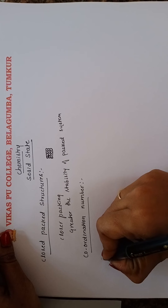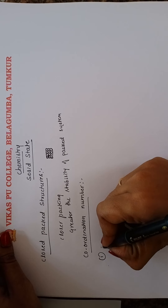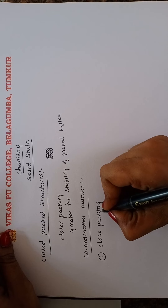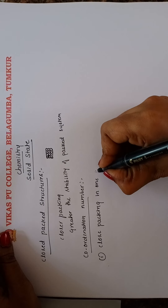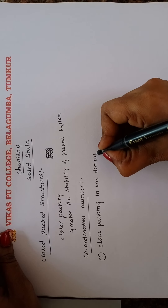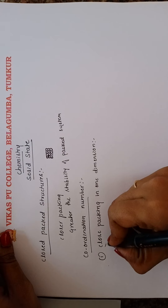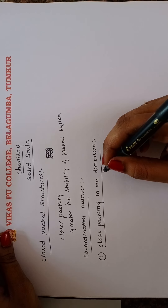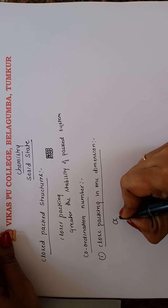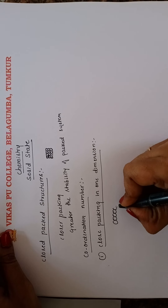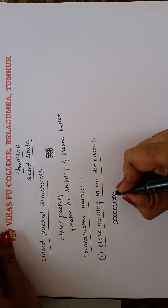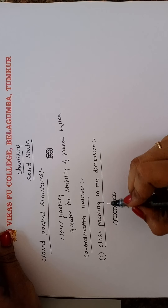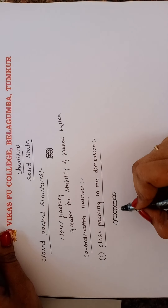First we are going to be discussing about closed packing in one dimension. In closed packing in one dimension, each sphere is in contact with two of its neighbours. The sphere here represents particles. This type of packing is called closed packing in one dimension.